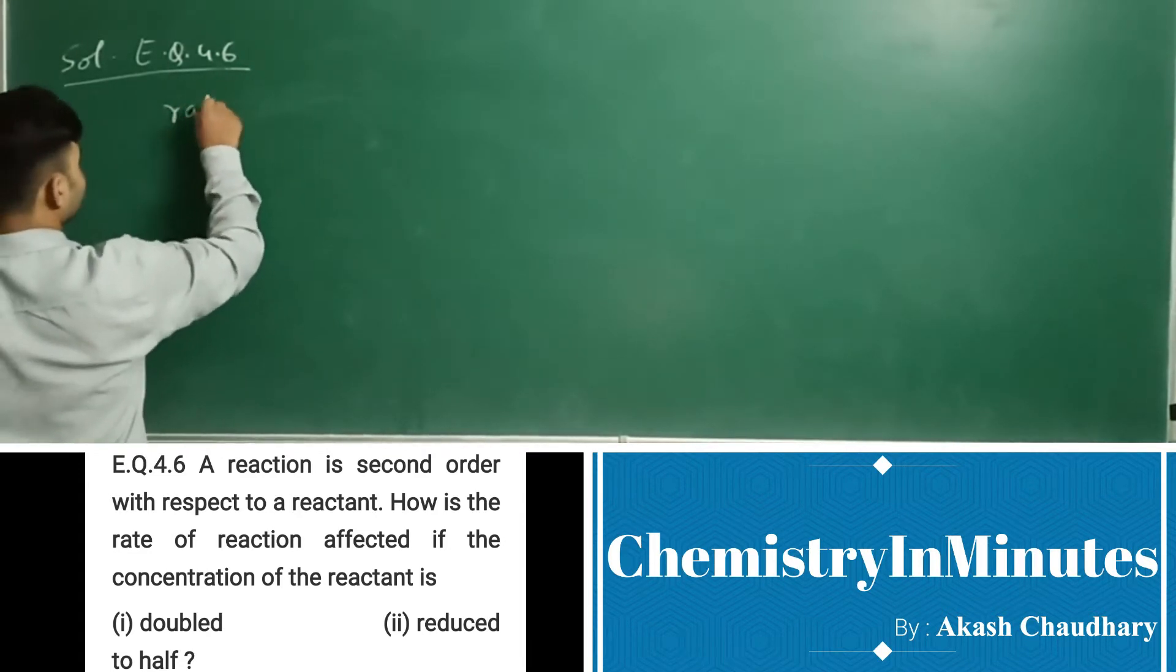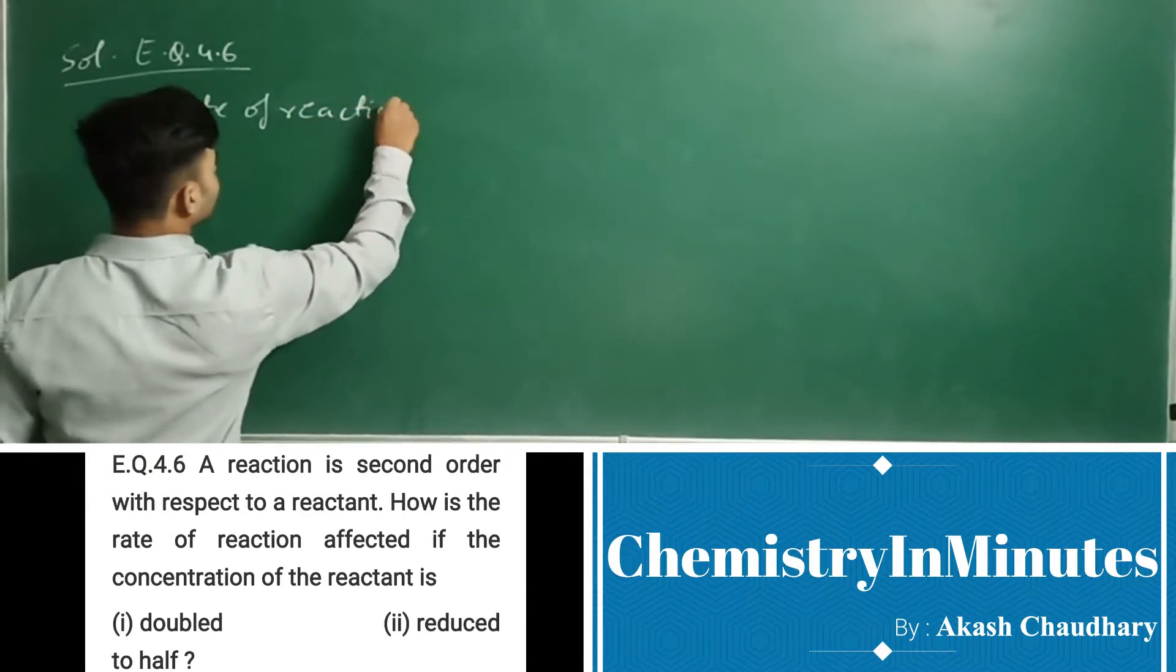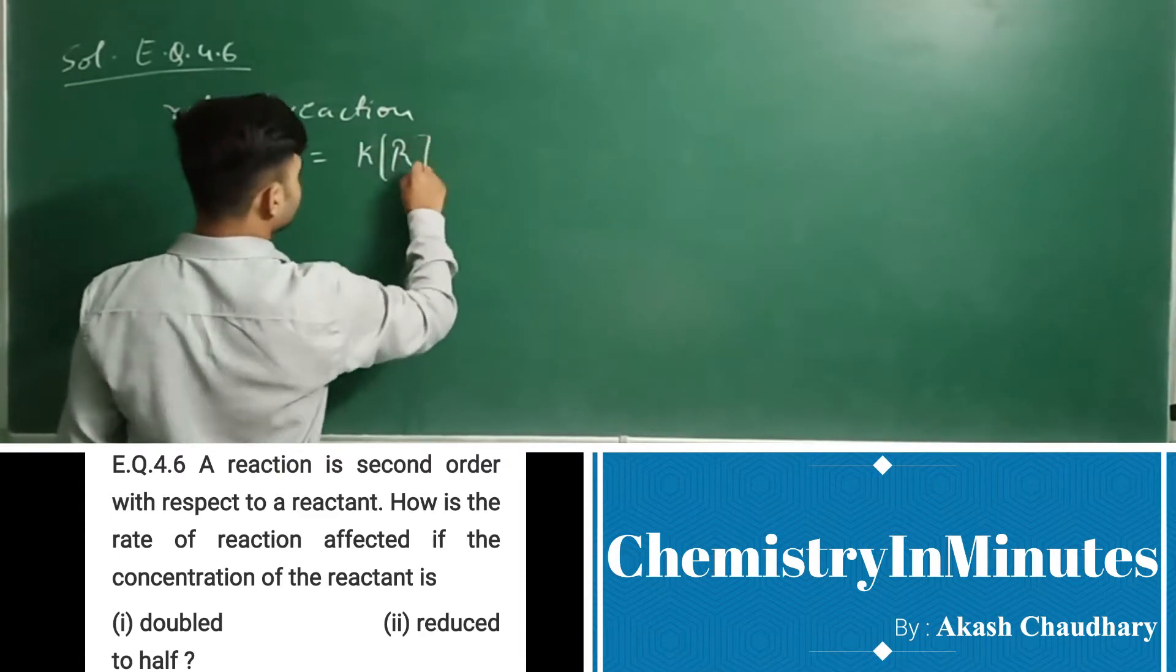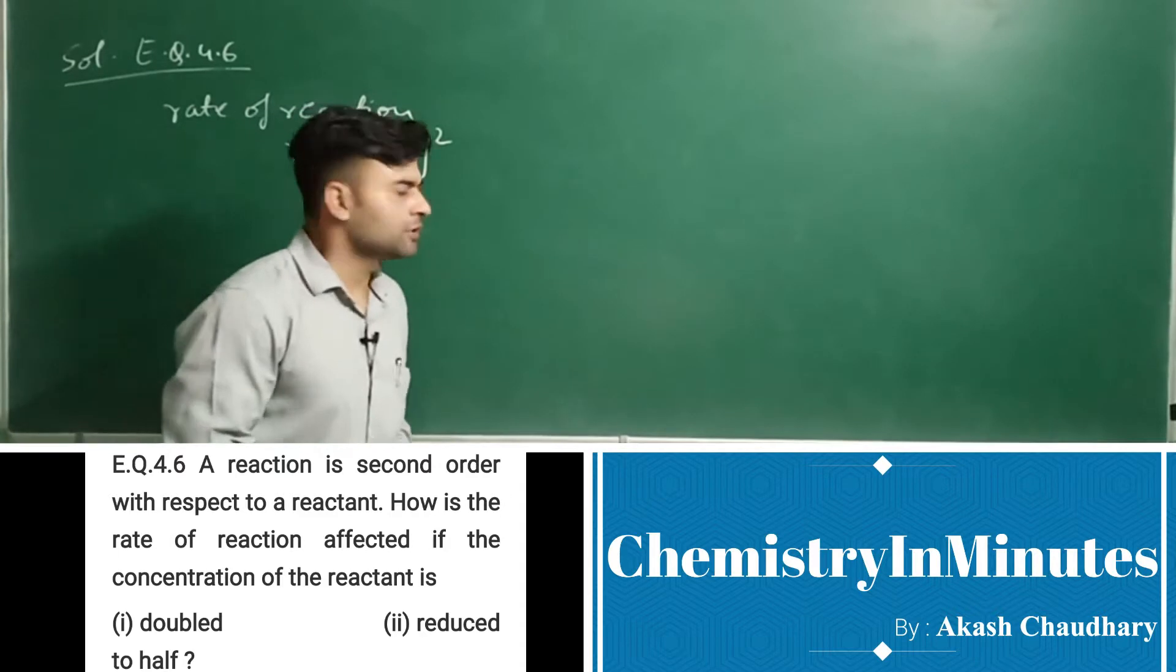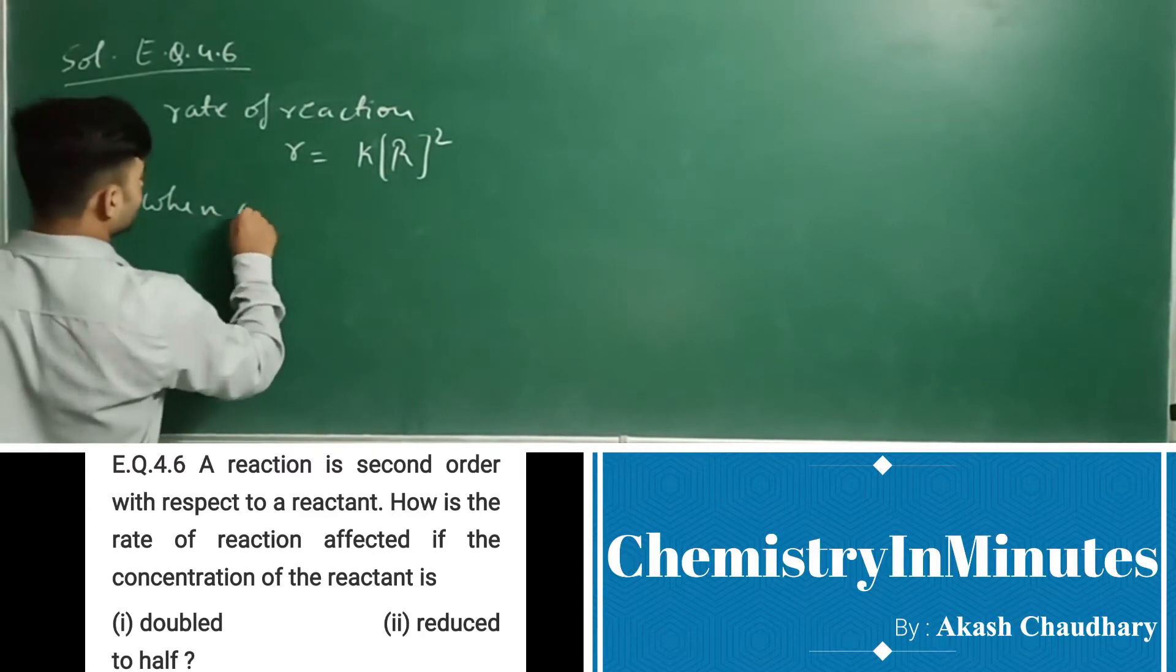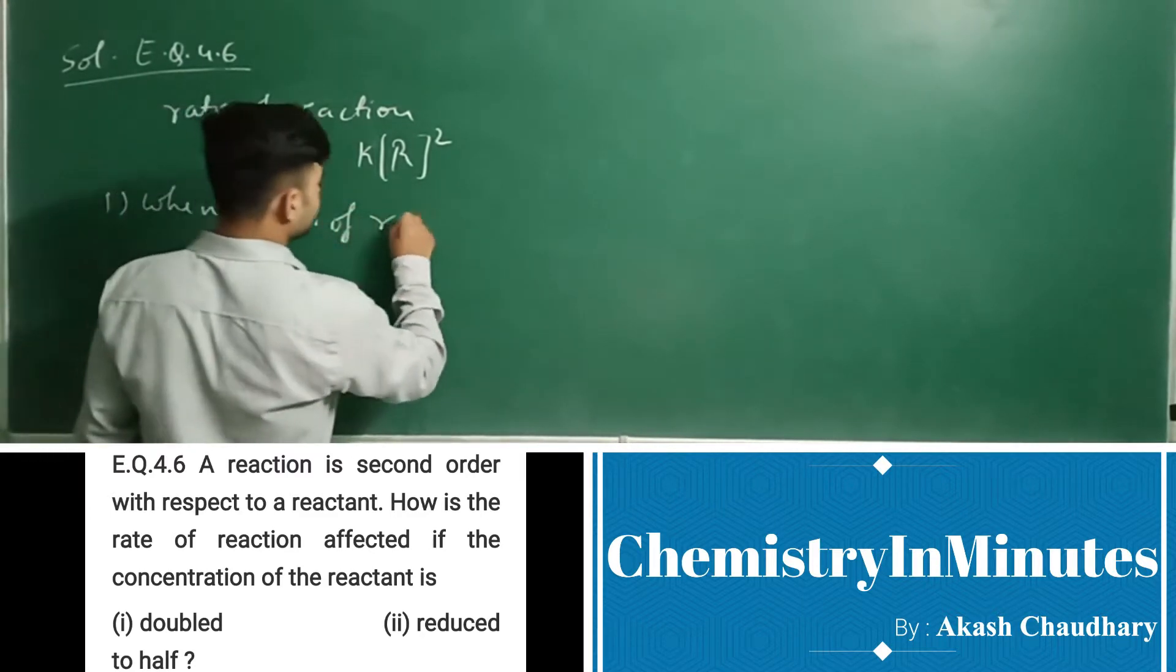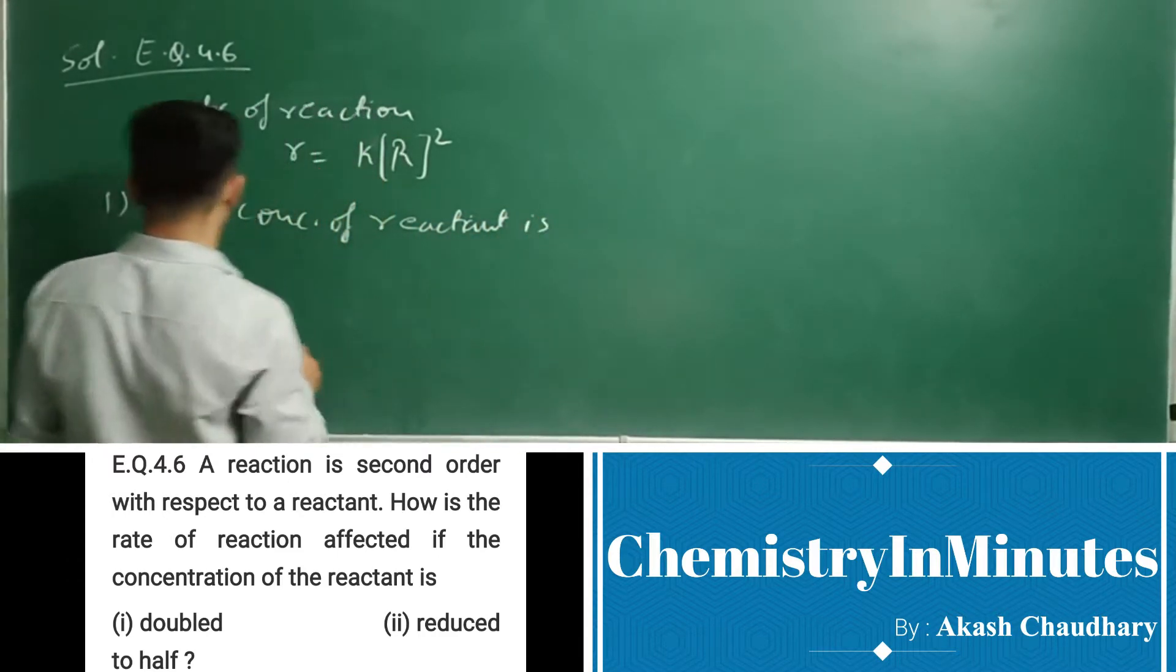Rate of reaction R equals K concentration of reactant raised to the power 2, as the reaction is second order reaction. Now, the first part: when concentration of reactant is doubled.